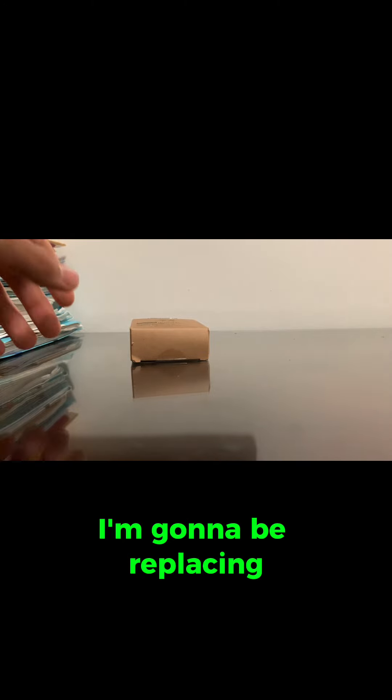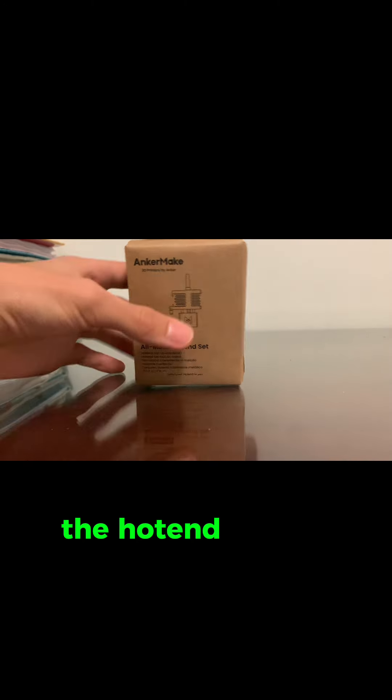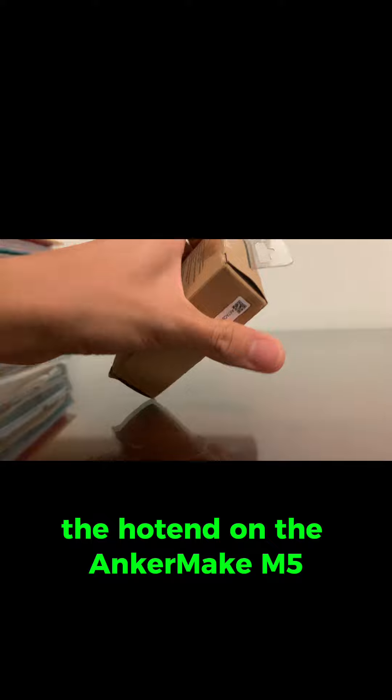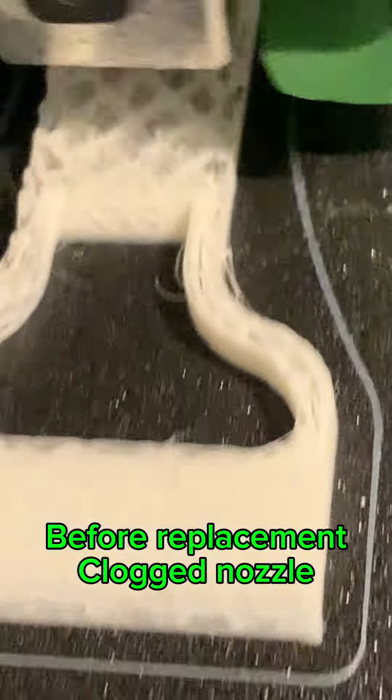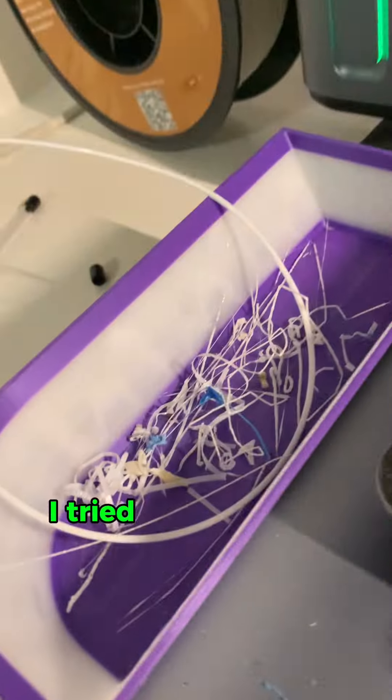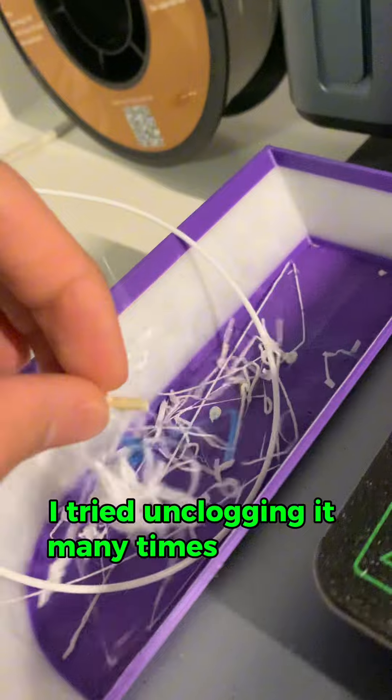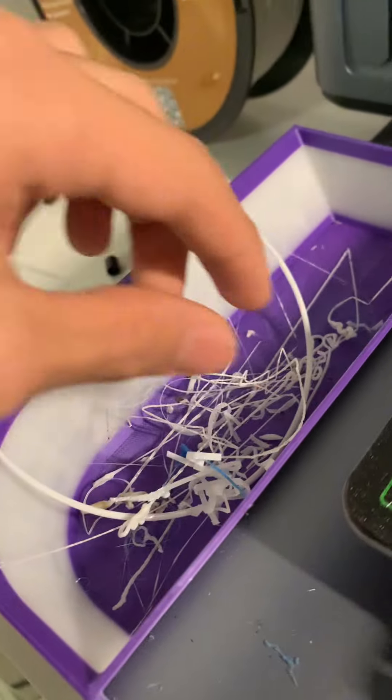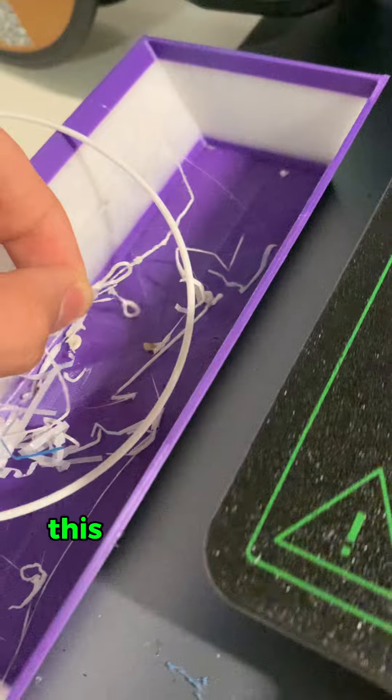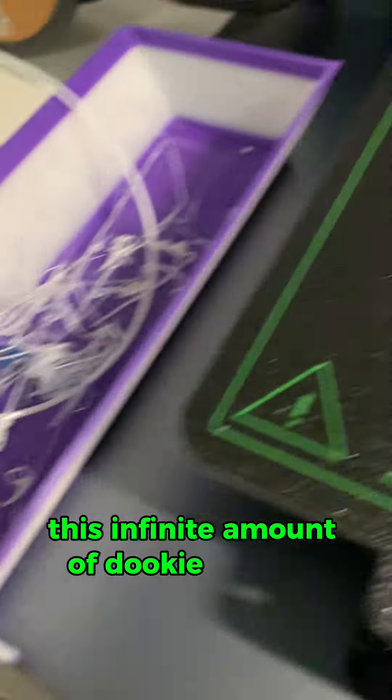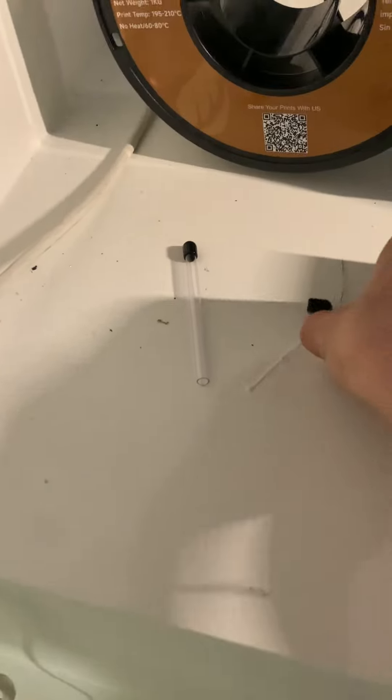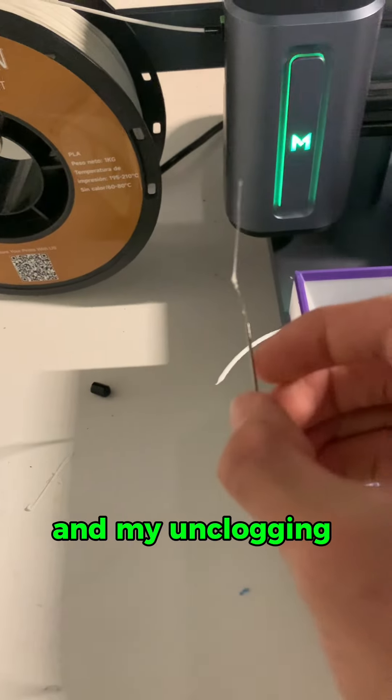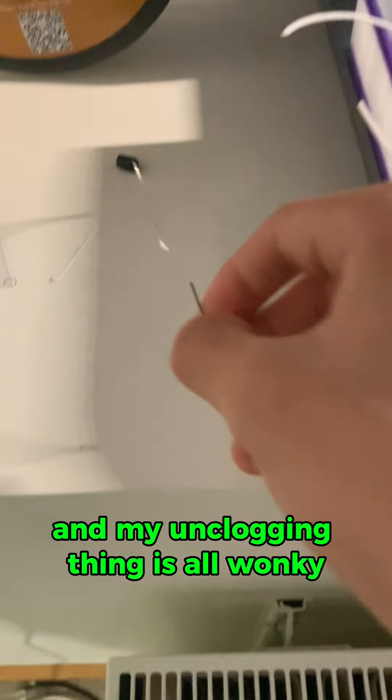I'm going to be replacing the hot end on the Ink Make M5. The nozzle is super clogged. I tried unclogging it many times but it was not working. There's infinite amount of filament in there, and my unclogging thing was all wonky.